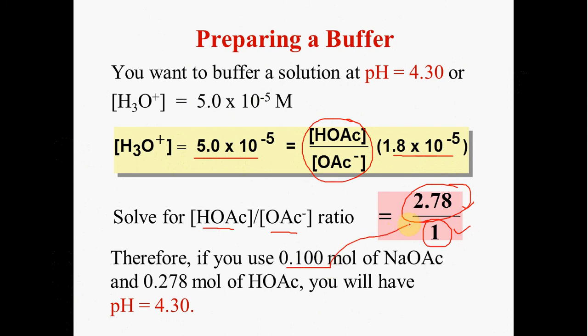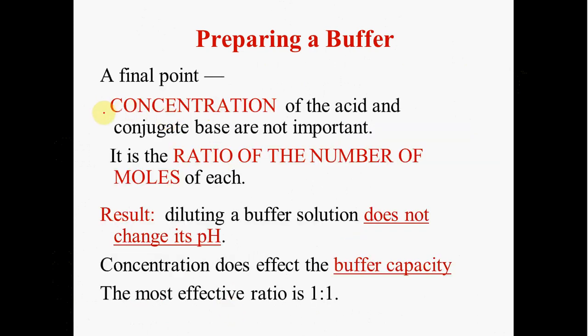A 0.1 mole of the conjugate base would require 0.278 moles of the acetic acid. No matter what the ratio is, as long as it's within this initial ratio, you will always have a pH that you're looking for. Make sure you understand the concentration of the acid and conjugate base are not important. You could use the 0.1 molar or the 1 molar. The concentrations are not important. It's the ratio of those moles that will determine the pH.